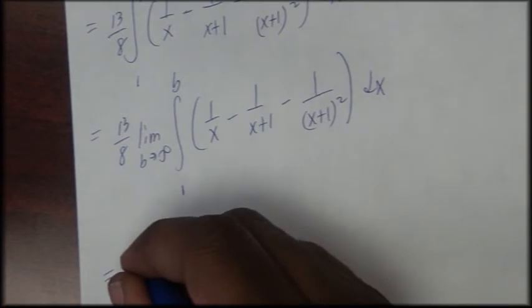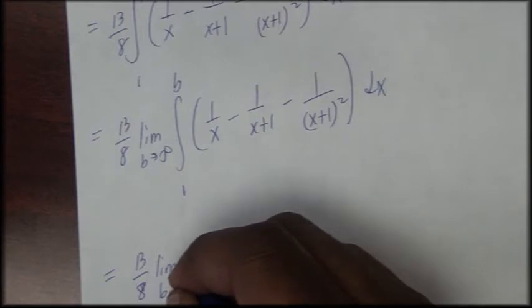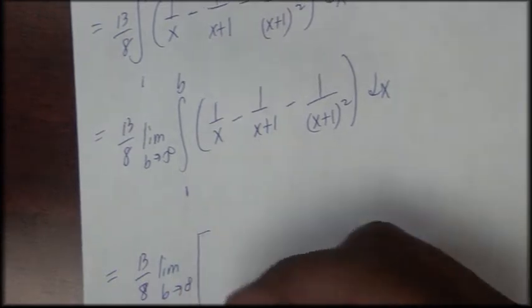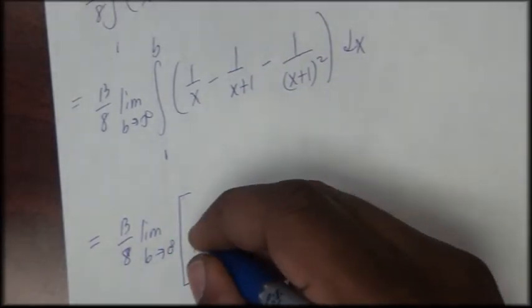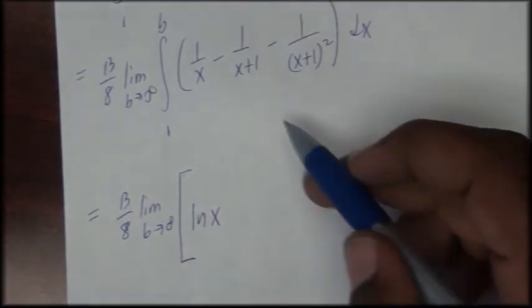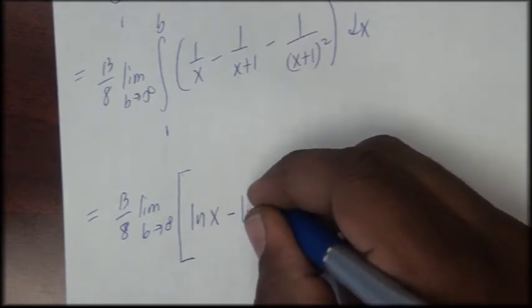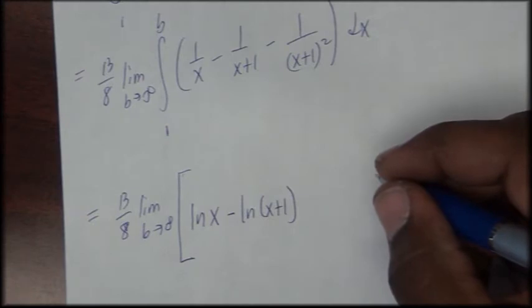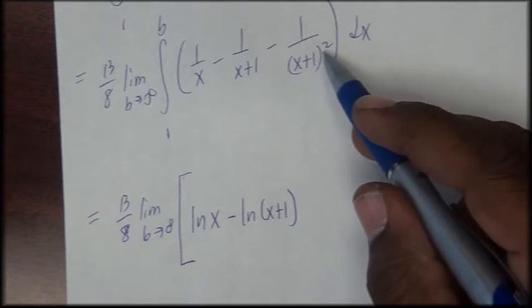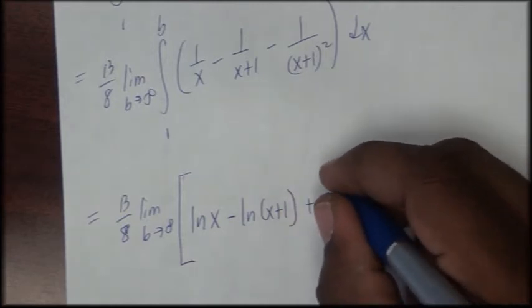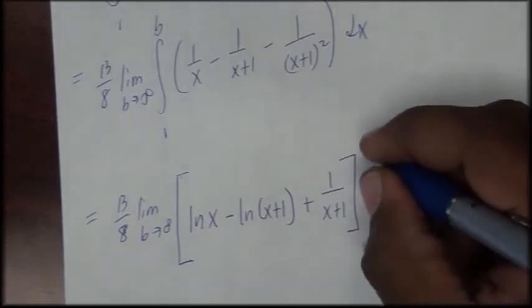So we have 13 over 8 times the limit as b approaches infinity. The integral of 1 over x gives natural log of x. The integral of negative 1 over (x plus 1) is negative natural log of (x plus 1). The integral of negative 1 over (x plus 1) squared gives us 1 over (x plus 1), and we're evaluating that from 1 to b.